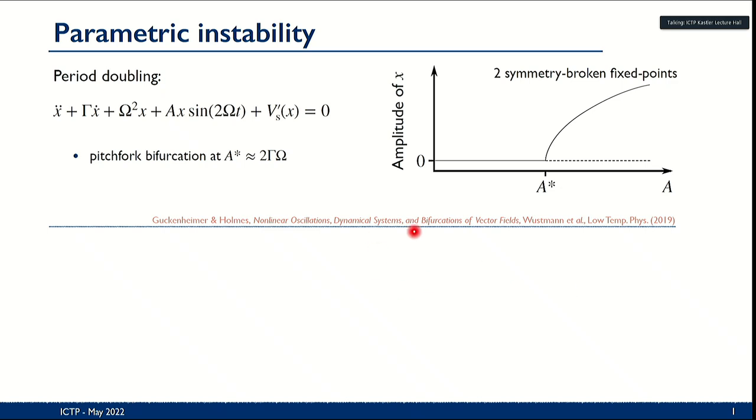For period doubling, we have a damped harmonic oscillator that is driven parametrically proportional to the amplitude X at twice the resonance frequency. Additionally, there's some small stabilizing potential that only becomes important if the amplitude of oscillations becomes very large. As we heard this morning, the system has a stable vacuum state below a certain amplitude in parametric drive where there are no classical oscillations. Then at a certain threshold, the system has a pitchfork bifurcation where we get an unstable vacuum state and two stable symmetry broken fixed points that correspond to an oscillation with half the driving frequency.